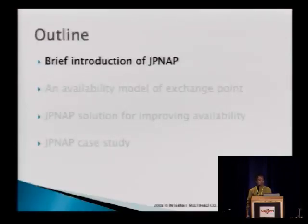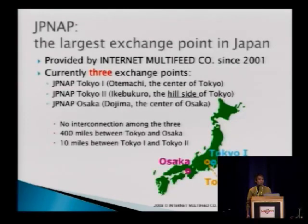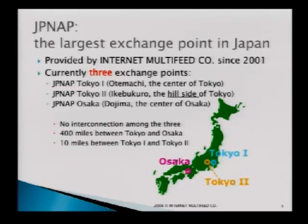First I would like to briefly introduce what JPNAP is. JPNAP is one of the largest exchange points in Japan, which has been provided since 2001. Currently there are three exchange points in Japan: JPNAP Tokyo 1, JPNAP Tokyo 2, and JPNAP Osaka. These three exchange points are not interconnected among them, so they are independent systems.